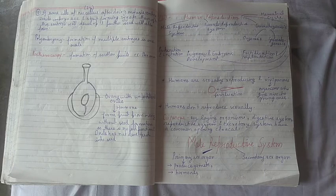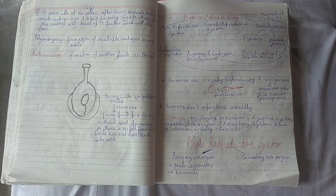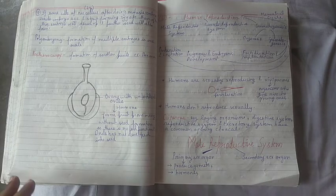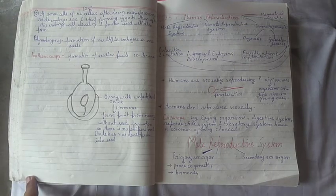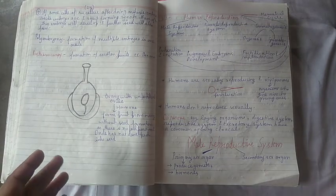We have two types of sex organs: primary sex organs, which are present from birth, and secondary sex organs, which develop at puberty.